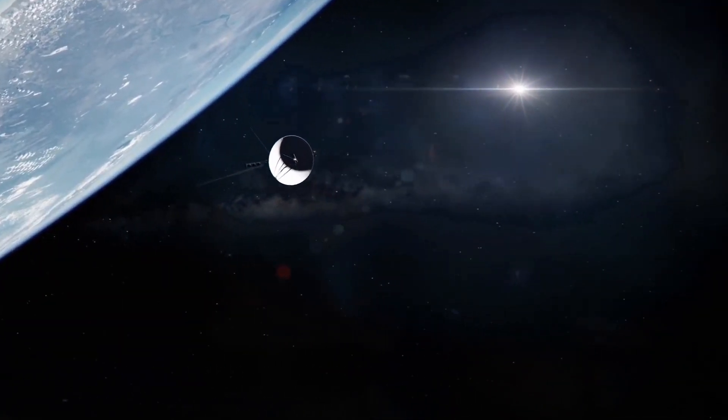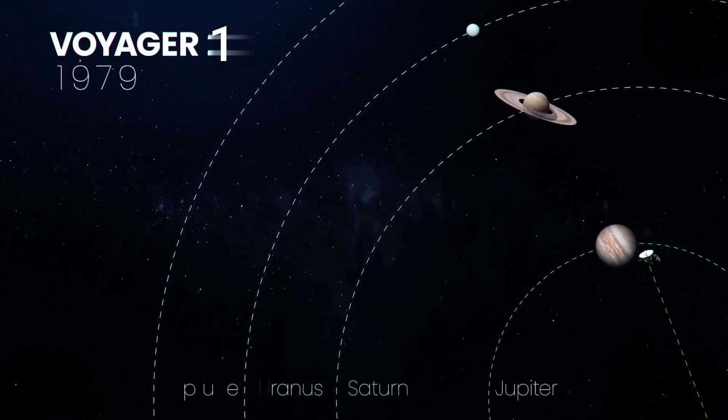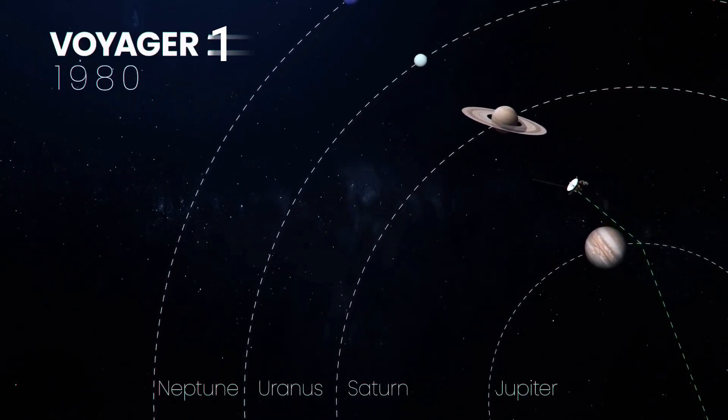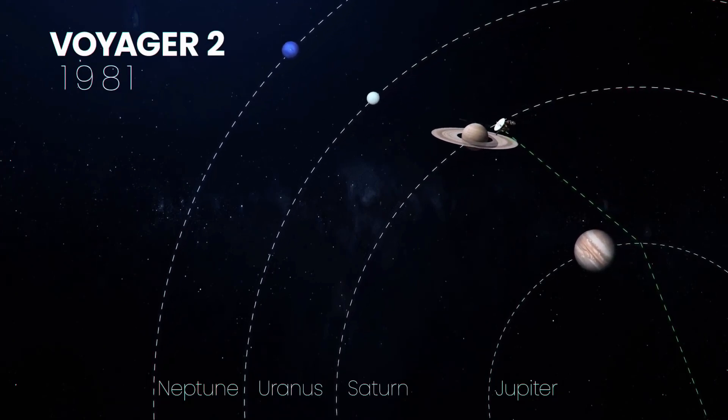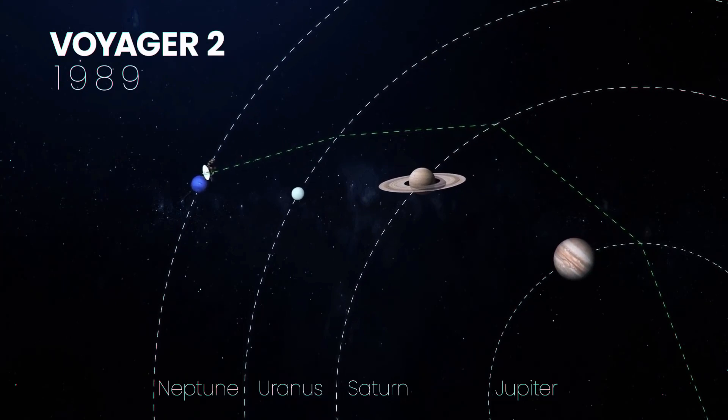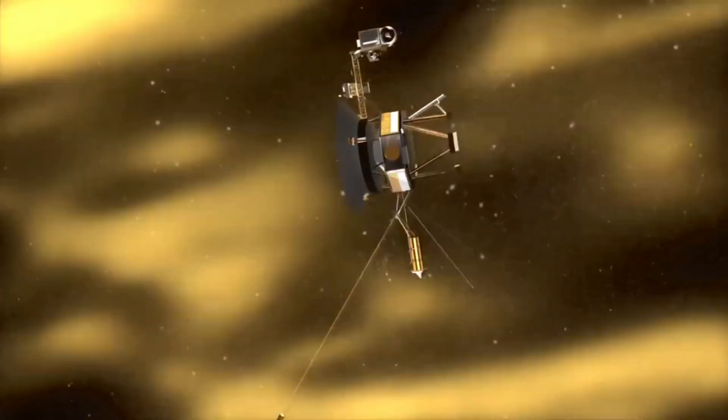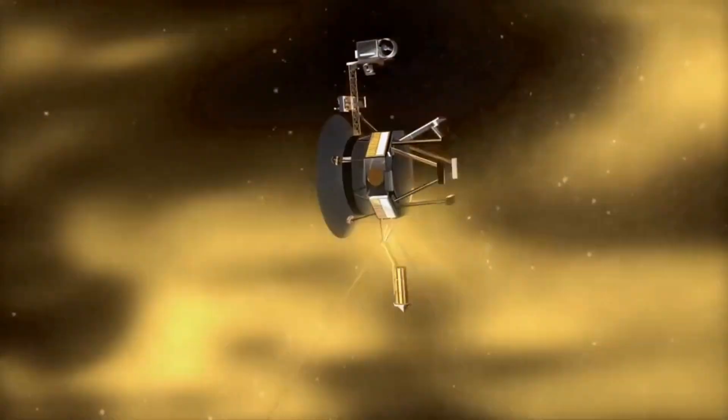At first, the mission was quite simple. Voyager 1 had to study the planetary systems of Jupiter and Saturn, and Voyager 2 had to study Uranus and Neptune. Currently, the Voyager probes are exploring the outer boundary of the heliosphere in interstellar space. As a result of their success, the mission has been extended three times as they continue to transmit useful scientific data.